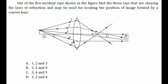Let's recall what the laws of refraction say. The first law states that the incident ray, the refracted ray, and the normal to the interface of the two transparent media at the point of incidence all lie in the same plane. The second law says that the ratio of the sine of the angle of incidence to the sine of the angle of refraction is a constant for light of a given color and a given pair of media — also known as Snell's law.